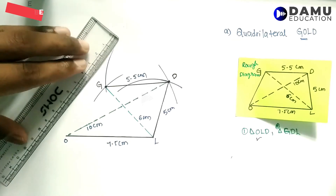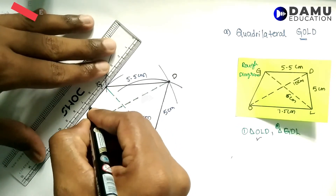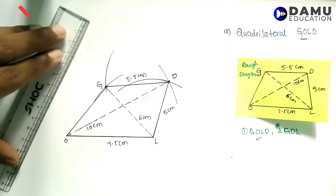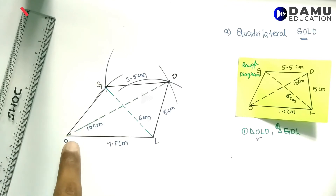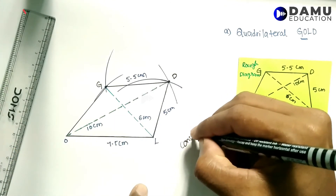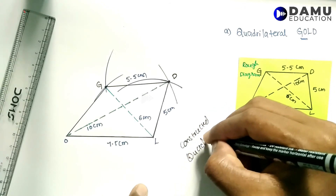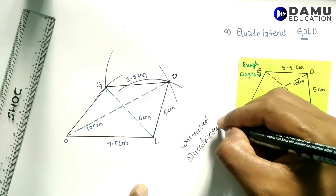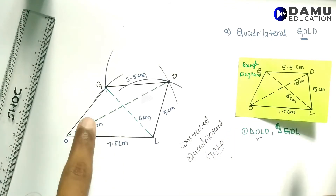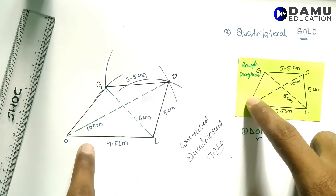Now join OG. We have now constructed the quadrilateral GOLD. Like this, we need to construct it by using the triangles and going with this method.